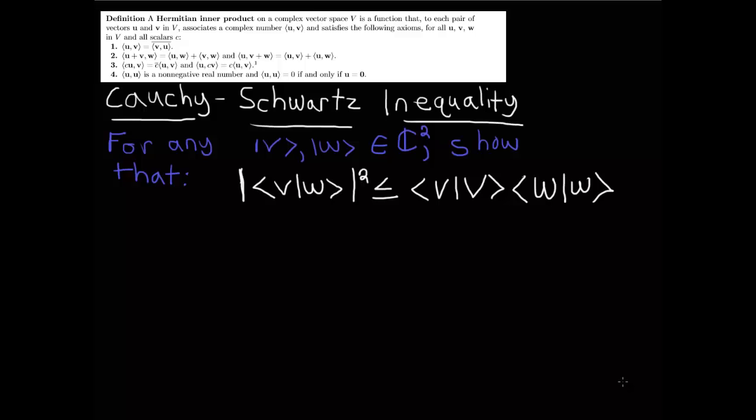Hey guys, today we're going to prove the Cauchy-Schwarz inequality using the inner product and its axioms. The Cauchy-Schwarz inequality states: for any v and w within the complex numbers, show that the inner product of v and w, squared, is less than or equal to the inner product of v with itself times the inner product of w with itself.